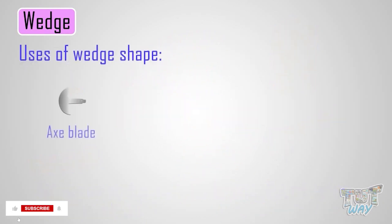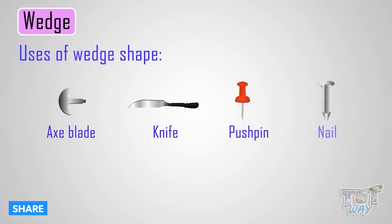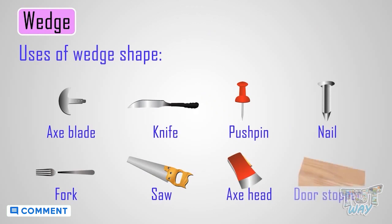An axe blade, a kitchen knife, a pushpin, a nail, a fork, a saw, axe heads, and door stops are examples of a wedge.